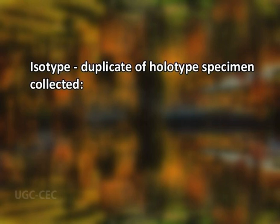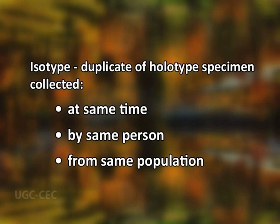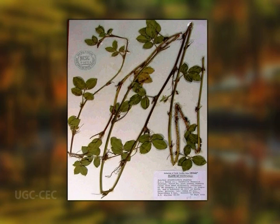An isotype is a duplicate specimen of the holotype collected at the same time by the same person from the same population. If several branches of a tree are collected at the same time, one specimen acts as a holotype and the remaining as isotypes. Isotypes are valuable in that they are reliable duplicates of the same taxon and may be distributed to numerous other herbaria to make it easier for taxonomists of various regions to obtain a specimen of the new taxon. For example, the specimen shown has been selected by Stoker as an isotype for Arachis glandulifera with accession number 30091, for which he has also designated a holotype.